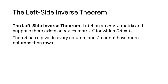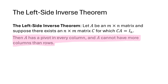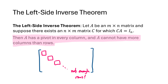It turns out that if such a matrix C exists, then A must have a pivot in every column, and A can't have more columns than rows. If we had a pivot in every column, each of those pivots also has to be in its own row. A matrix with more columns than rows would be wider than it is tall, and there wouldn't be enough rows to have a pivot in every column. So having a pivot in every column means we can't have more columns than rows.